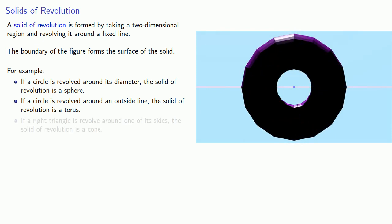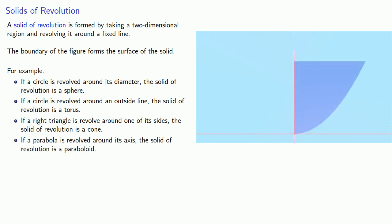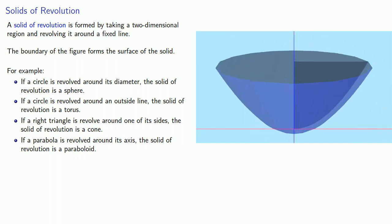If a right triangle is revolved around one of its sides, the solid of revolution is a cone. If a parabolic region is revolved around the axis of the parabola, the resulting solid of revolution is a paraboloid.